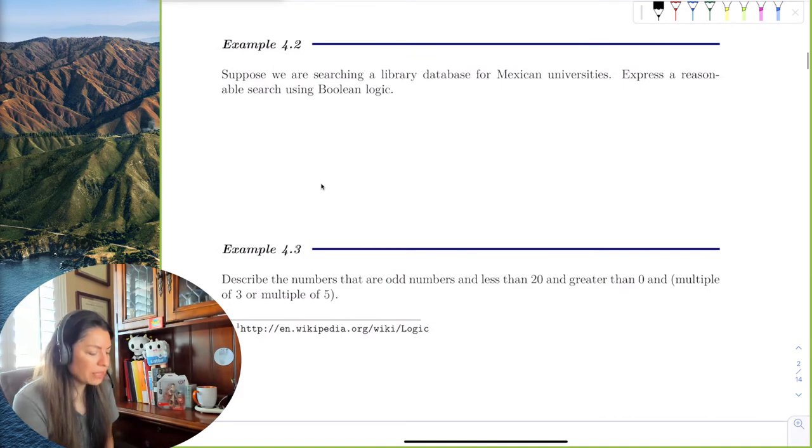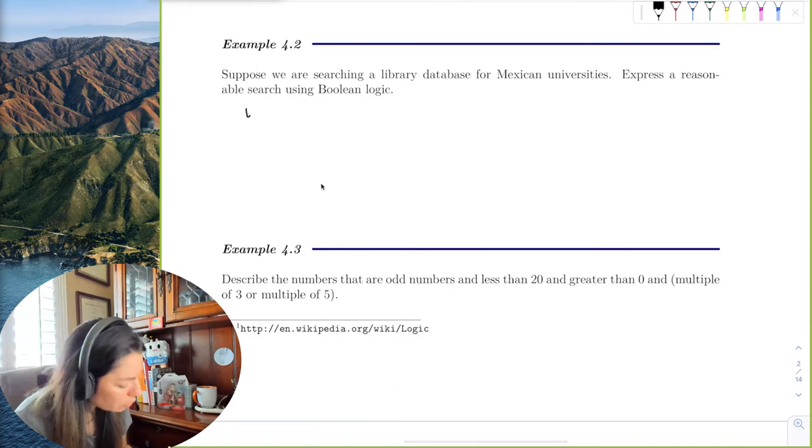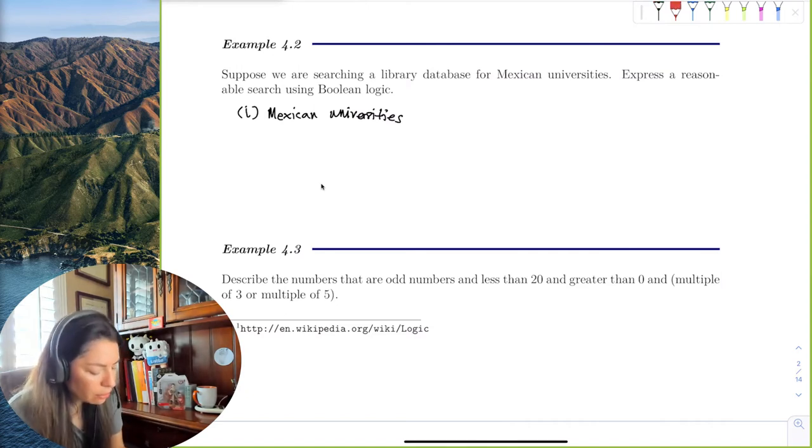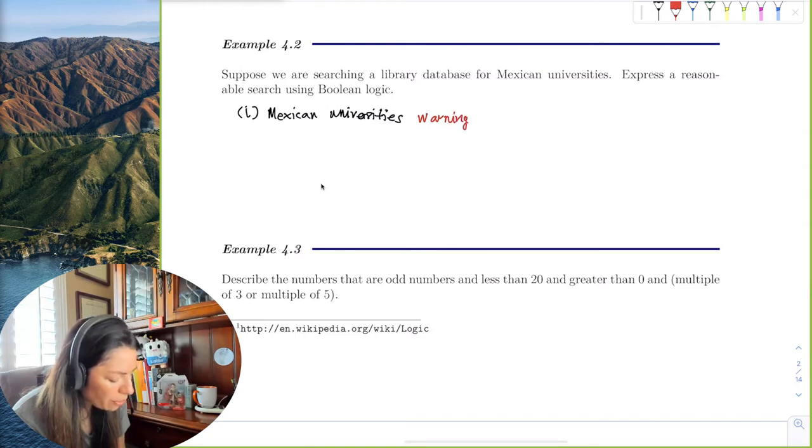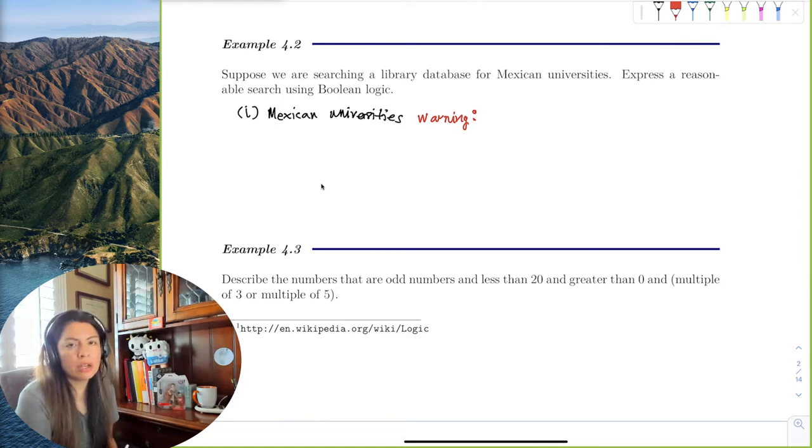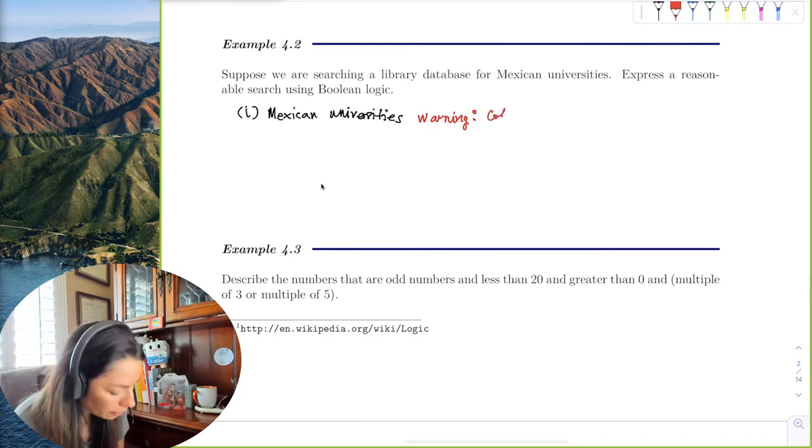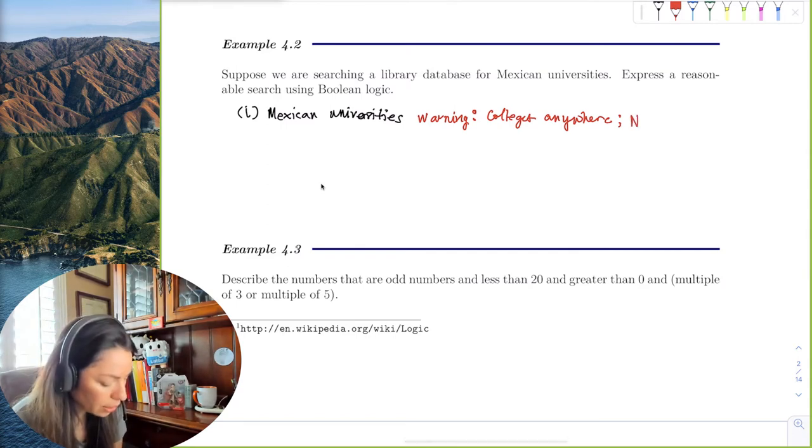Suppose we're searching a library database for Mexican universities, express a reasonable search for Boolean logic. This is the greatest example to start with, because for example, if I went to Google and wanted to search for Mexican universities, what would you put in the search? Well, you were like, I would put in what exactly what you wrote down, Mexican universities. However, the only problem here is that sometimes when we put in exactly the obvious, remember that Google and Bing and all those search, Yahoo, they tend to grab everything internationally, all over the world.